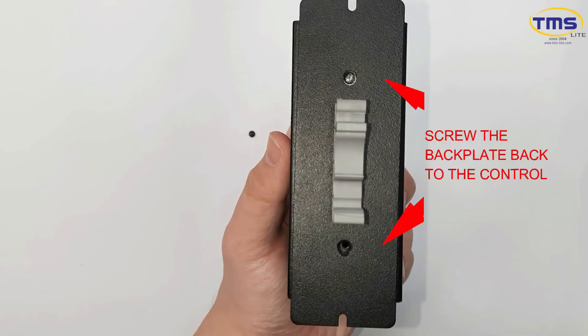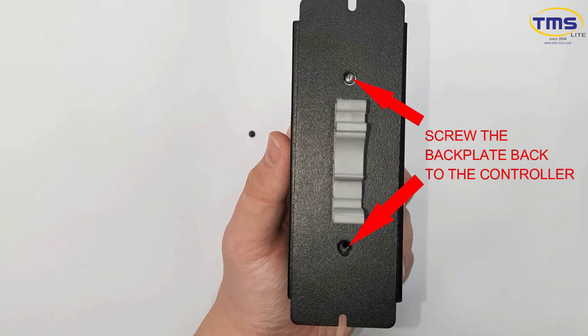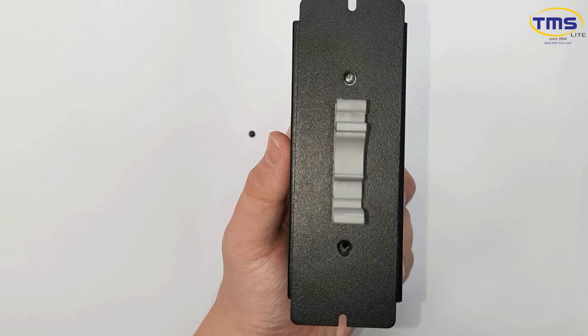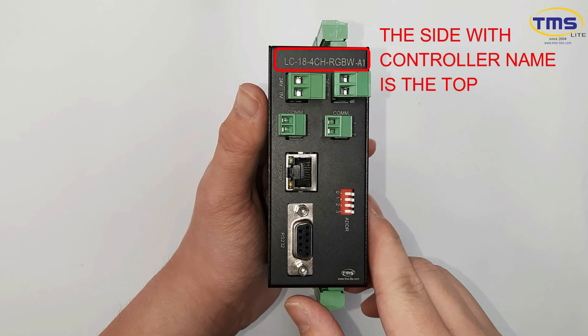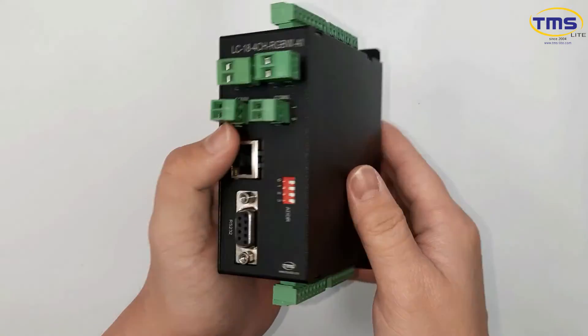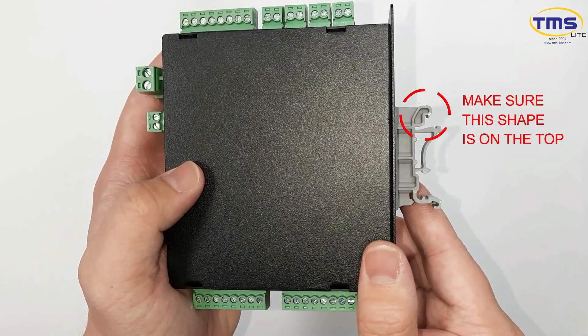Screw the backplate back to the controller. The side with the controller model is on the top. Make sure this shape is on the top along with the controller model.